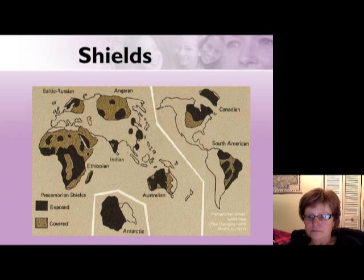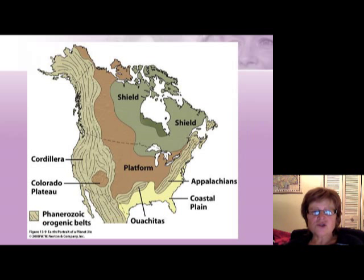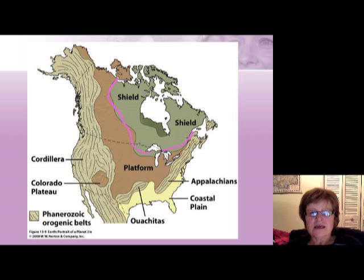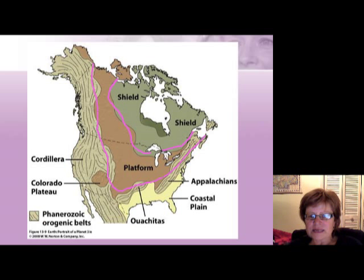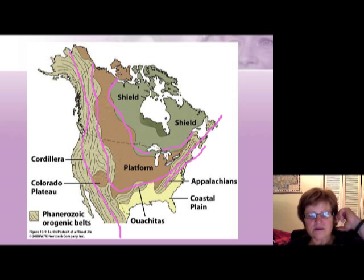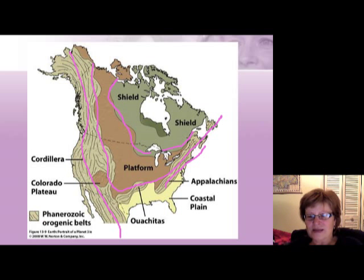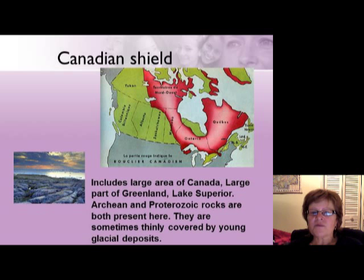This picture shows North America. You can clearly see that the green area is the shield, located mostly in Canada — there is no shield in the continental USA. The brown area is the platform, underlain by Precambrian rocks. Then you have the so-called mobile belts — the active orogenic regions like the Appalachians and the Cordillera — which are Phanerozoic orogenic belts we'll discuss throughout the rest of the semester.